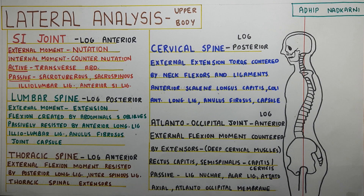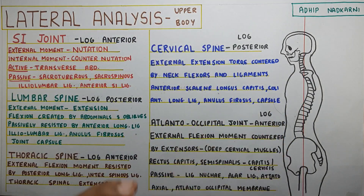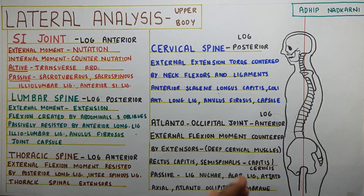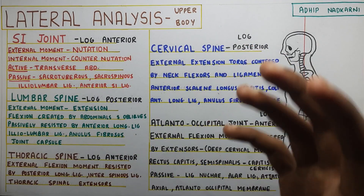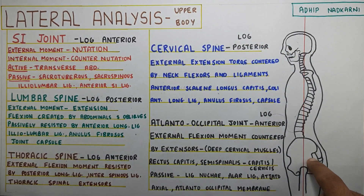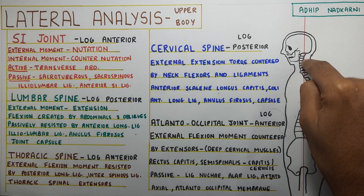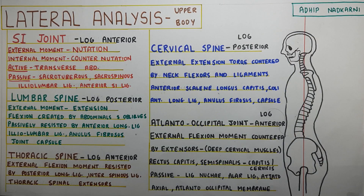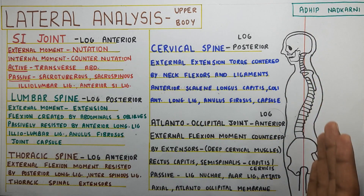In this video, we are going to talk about the lateral analysis of the upper body. Last video was about the lower body. We will be talking about the SI joint, then the lumbar, thoracic, cervical, and atlanto-occipital. The first thing I want you guys to know is the line of gravity.